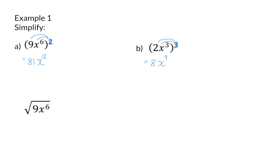In example 2 we are going to have a look at square roots and cube roots. In example A we need to calculate the square root of 9x to the power of 6. This means we need to break this up into two identical factors — we need to determine what times itself will give 9x to the power of 6.